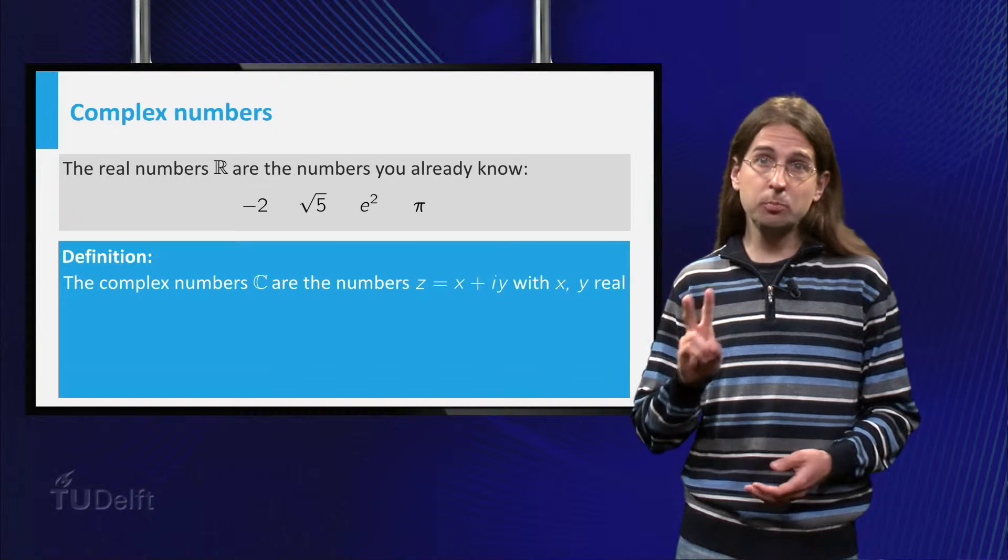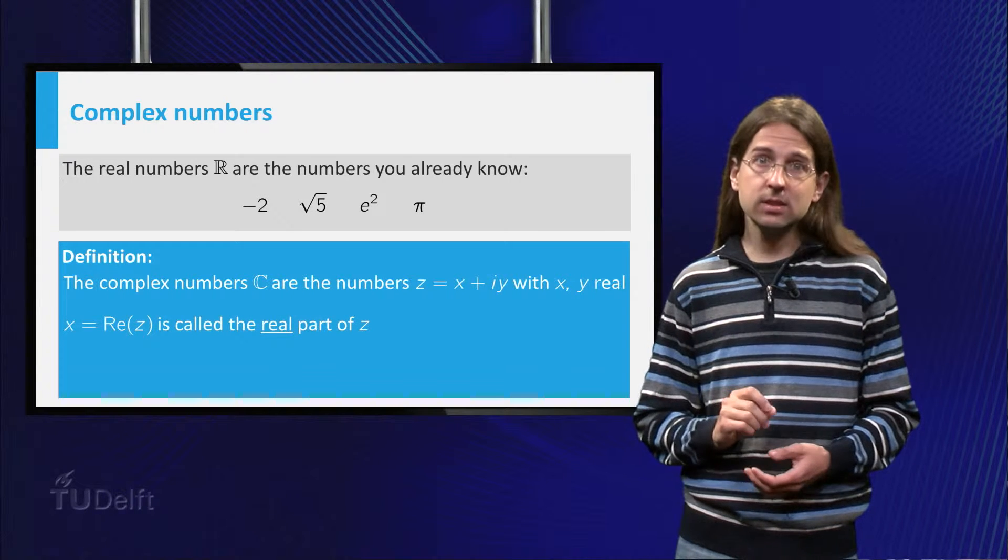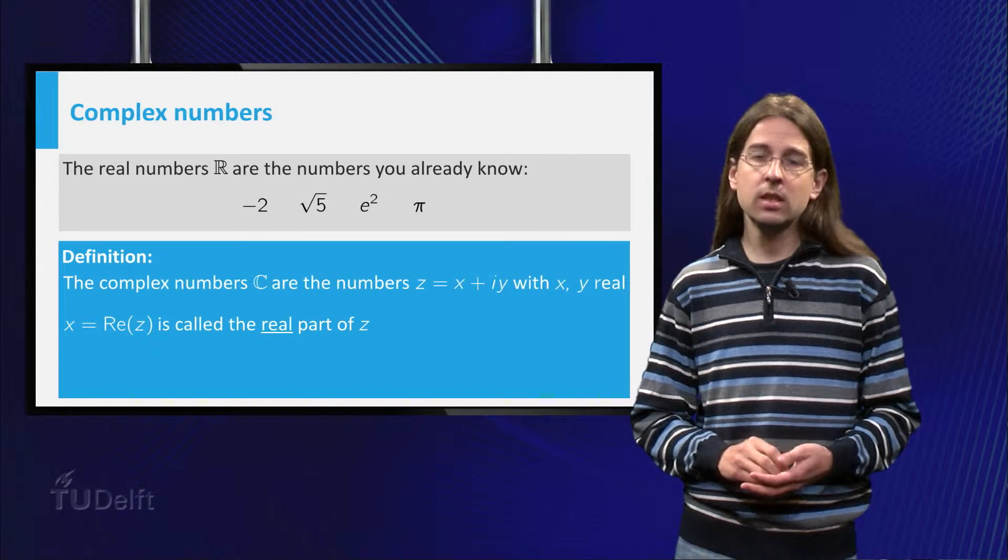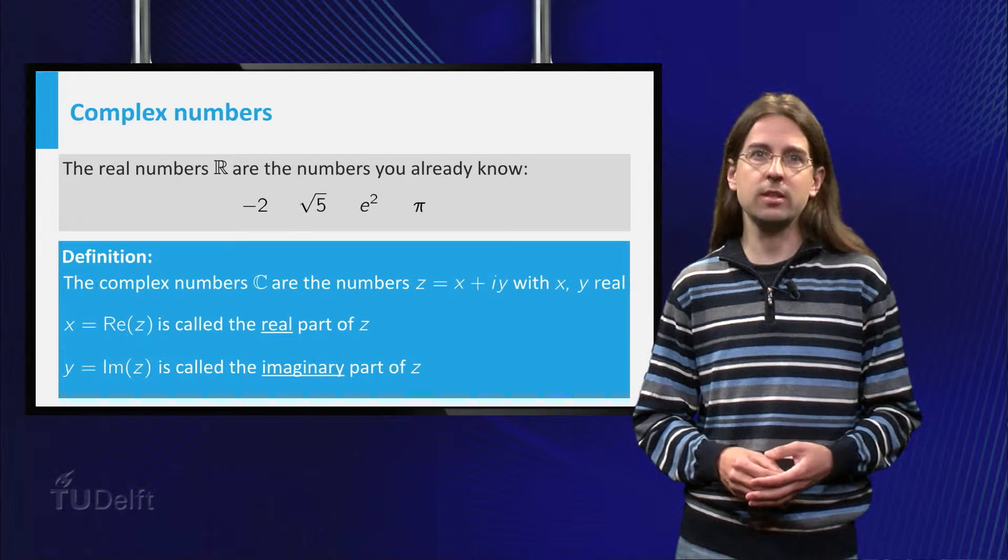These numbers consist of two parts. x is called the real part of z and y is called the imaginary part of z.